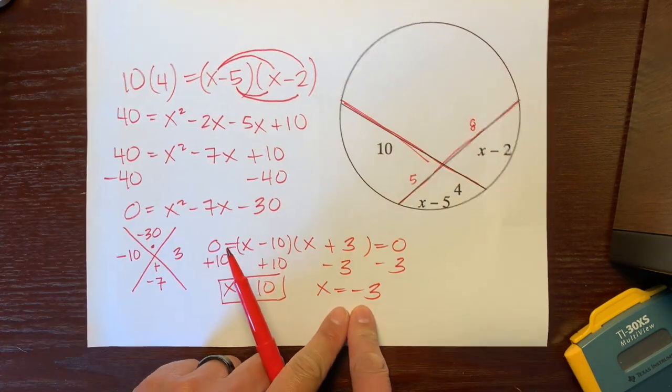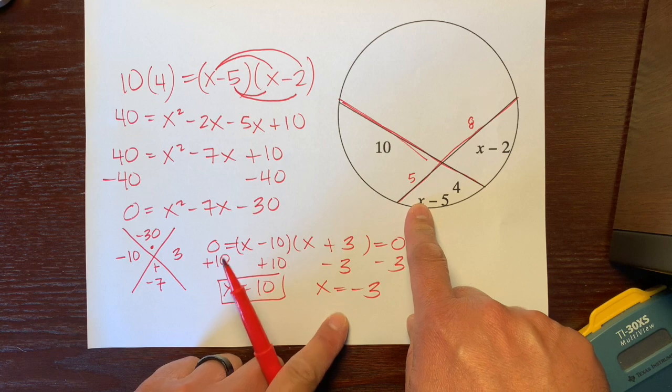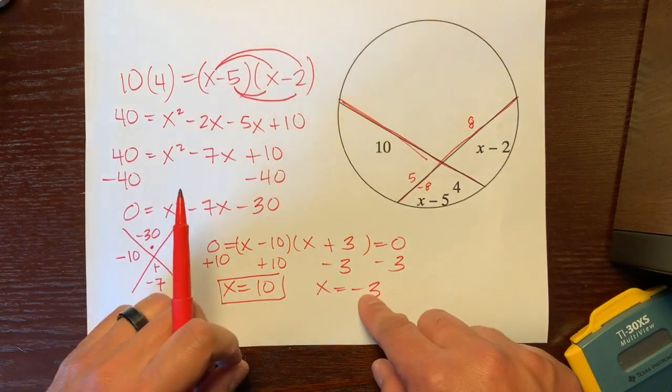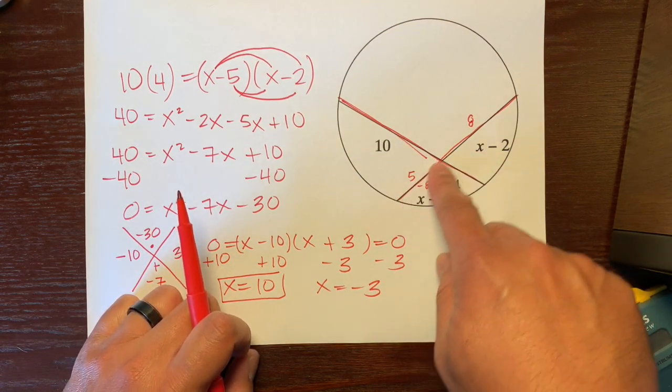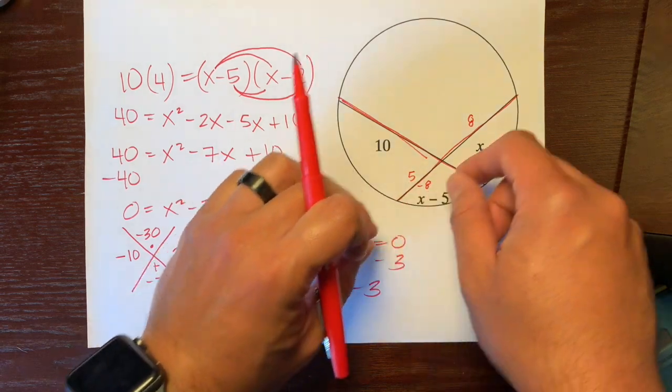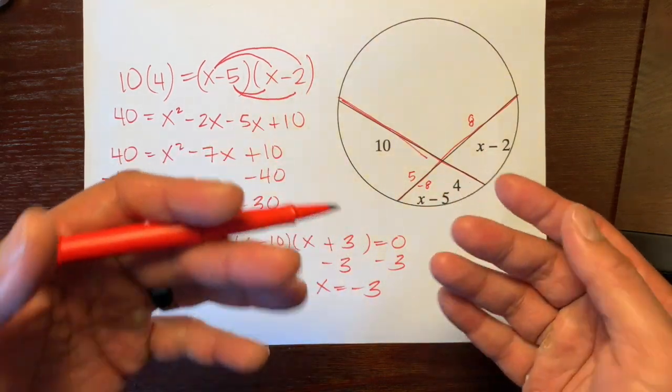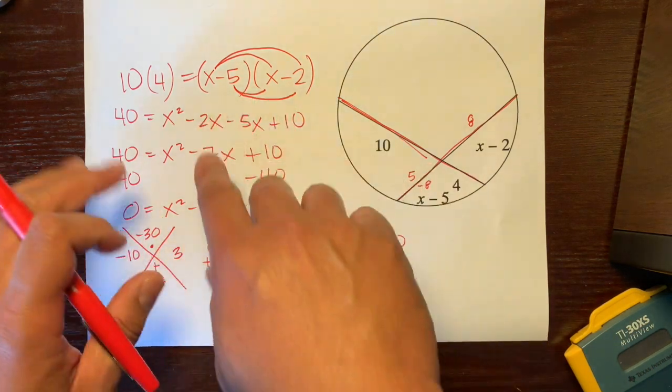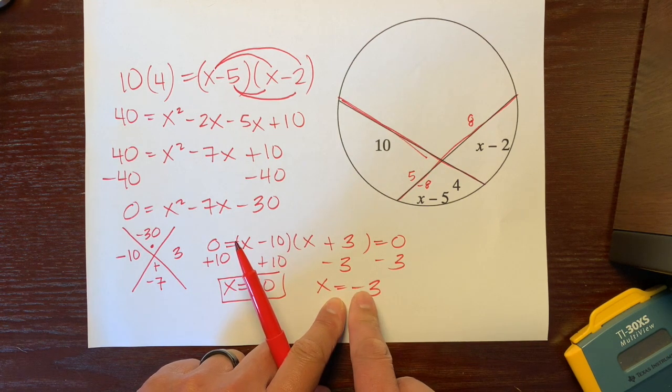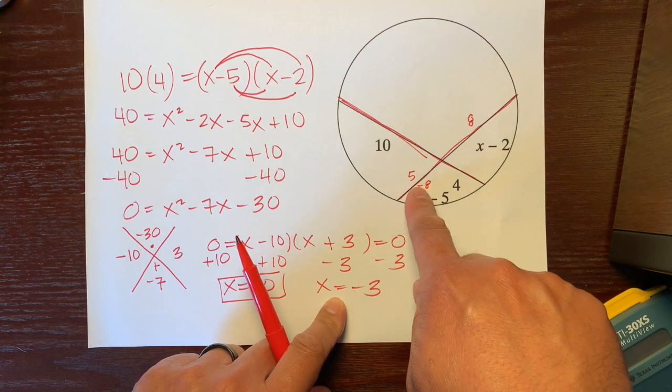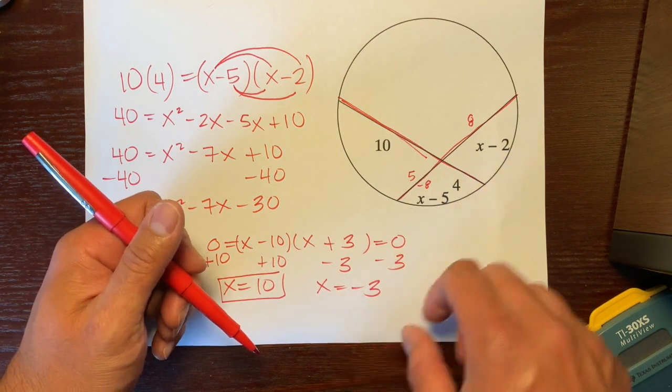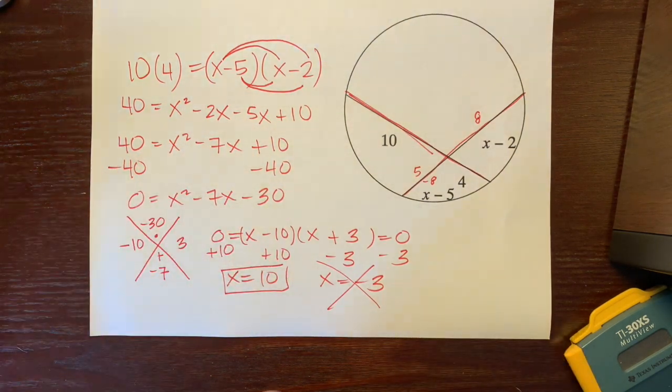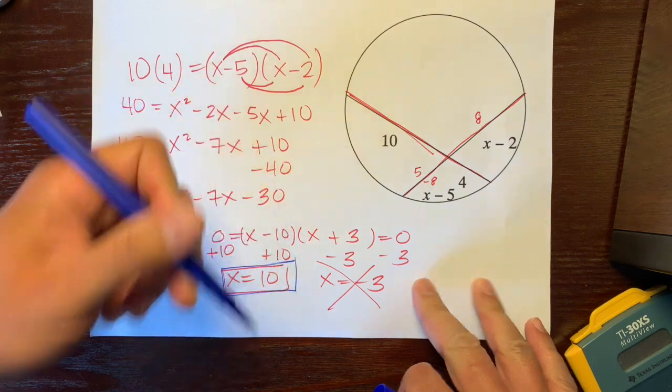But here's the thing with this negative right here. If I plugged in this negative into here, negative 3 minus 5 would be negative 8. I'm just going to stop right there. I'm not even plugging that negative 3 in here because a chord or anything of length cannot be a negative length. So if we plugged in this negative 3 in here, this would give us a negative length. So yeah, even though we did all this work, we got x by itself, because this negative value gives us a negative length, we can't use this value. So this is our one and only answer: x is equal to 10.